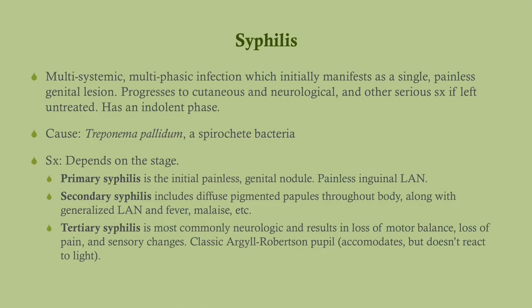Syphilis is a multisystemic, multiphasic infection classically characterized by a painless genital lesion, but it can progress to systemic disease if not treated and has a very long indolent phase. The cause is Treponema pallidum, a spirochete. Primary syphilis is where we see the genital nodule and possible lymphadenopathy. Secondary syphilis presents with diffuse pigmented papules on the hands and feet and flu-like symptoms. If not treated with penicillin over a long period of time, they develop tertiary syphilis — tabes dorsalis, gummas, and Argyll Robertson pupils.